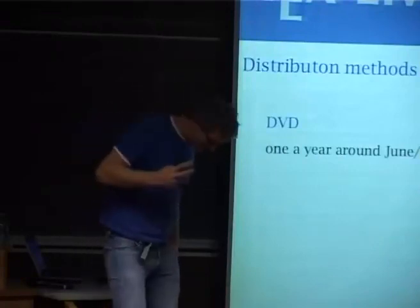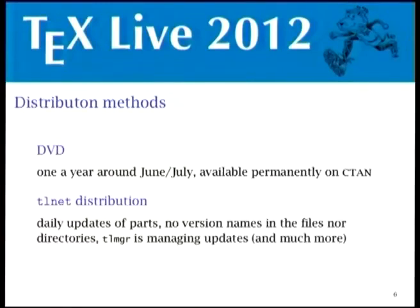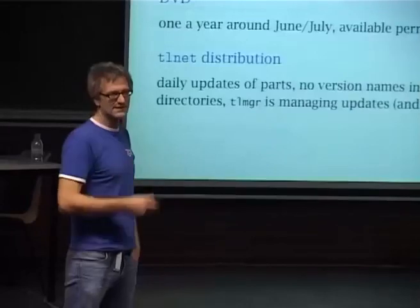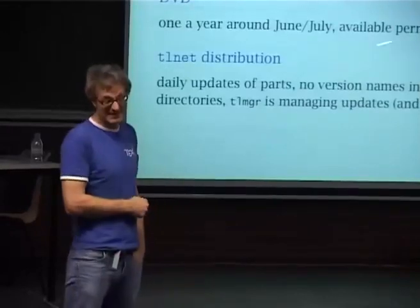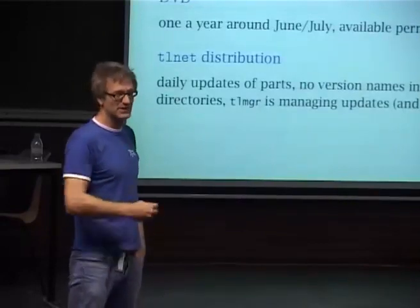What are our distribution channels? We have one DVD per year, normally around June, which stays current for about one year. But most people nowadays use what we call TeX Live network distribution — you download a very small installer written in Perl. For Windows we have to ship Perl with the installer. This changes practically daily on the CTAN network, and this is also where the TeX Live Manager pulls updates from.